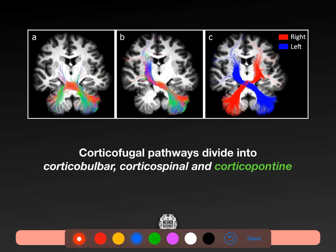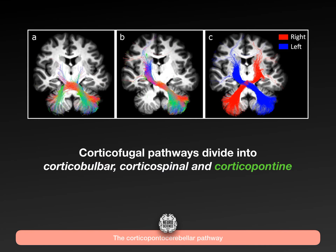The corticopontocerebellar pathway sounds like a mouthful but it's nice and easy: we use our motor cortices and project contralaterally to the cerebellum. The corticofugal pathway is a trilaminar thing - corticobulbar goes to the cranial nerve nuclei, corticospinal goes to the lower motor neurons in the spinal cord, and corticopontine goes to the front of the pons. The pons then has horizontal fibres that go through the MCP to the deep cerebellar nuclei.